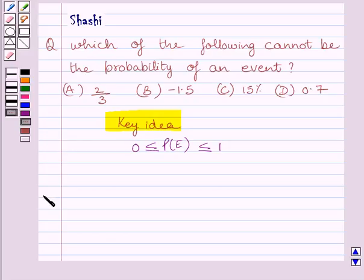Let us now start with the solution. First of all, let us consider 2 upon 3. Clearly we can see 2 upon 3 is greater than 0 and less than 1. So, it satisfies this condition. This implies 2 upon 3 can be the probability of an event.